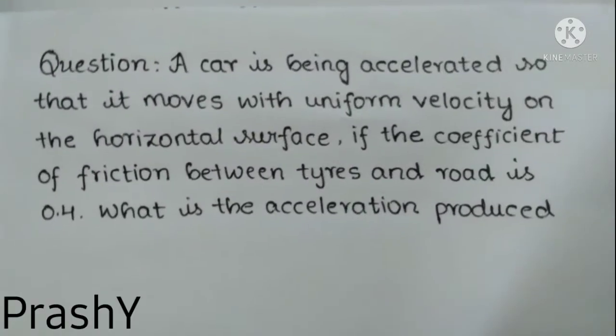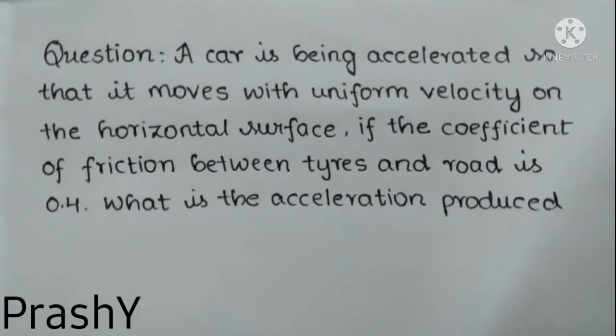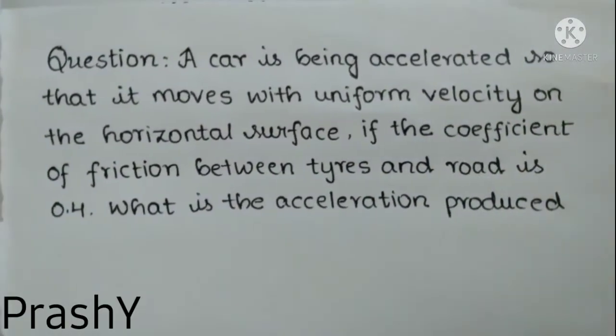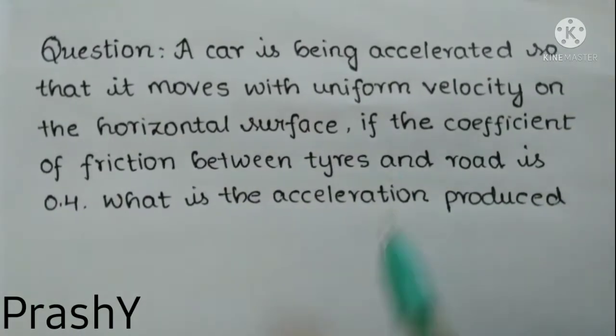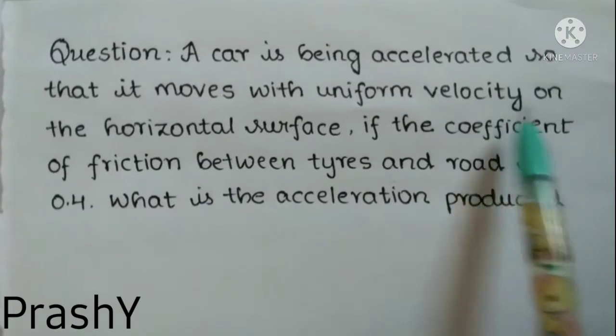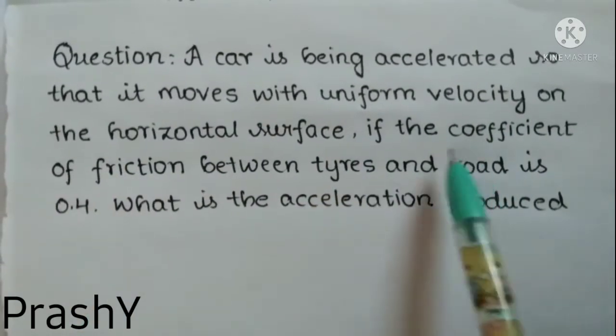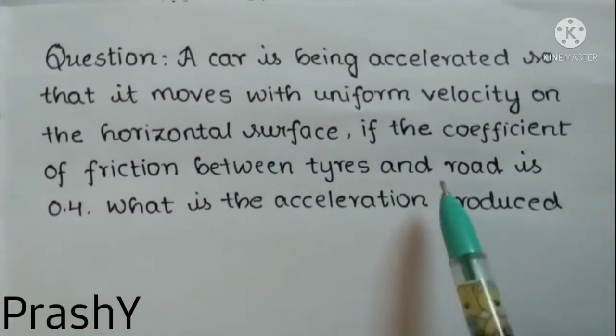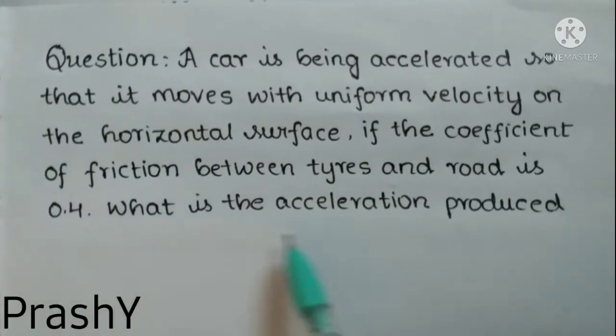Welcome back to our channel Crash Y. Today we are going to discuss a problem from physics under the topic of friction. Here is the question: A car is being accelerated so that it moves with uniform velocity on a horizontal surface. If the coefficient of friction between the tires and the road is 0.4, what is the acceleration produced?